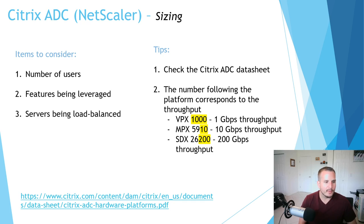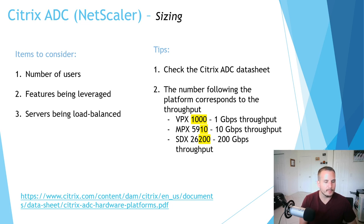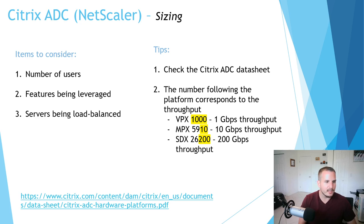You'll notice as you go through the data sheet that the number following the platform corresponds to the throughput. In the VPX world, a VPX 1000 is one gigabyte of throughput; a VPX 10 is 10 megabytes; a VPX 5910 is 10 gigabytes. An SDX 26200 is 200 gigabytes of throughput. So look at the last numbers to identify exactly what the throughput capability is for that license type.